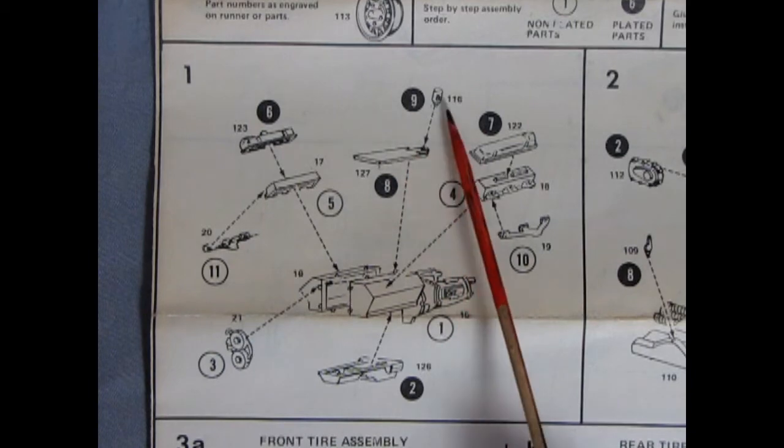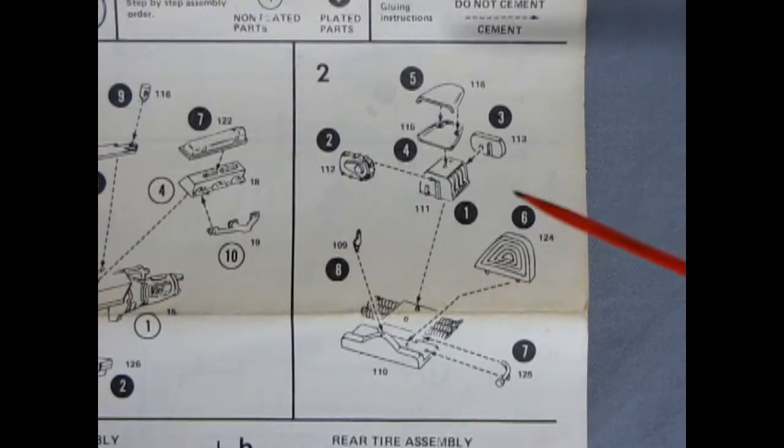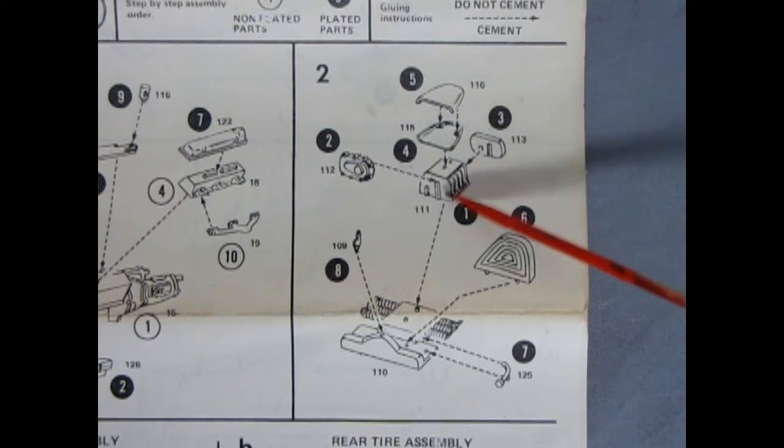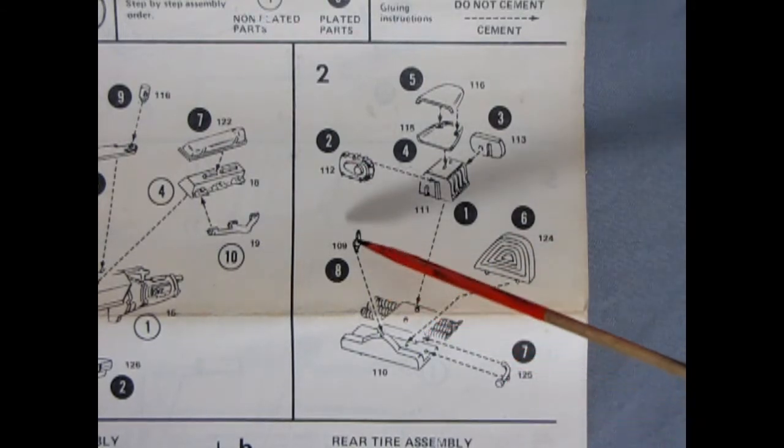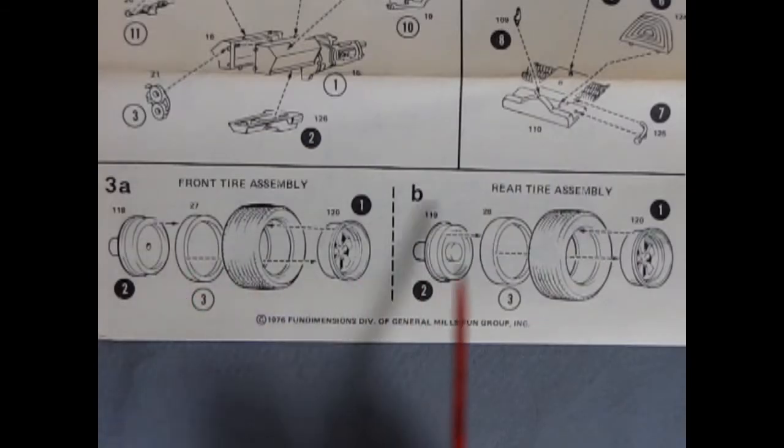Next up we have our one, two, three, four, five piece blower - actually a six piece because there's a cover in the front - and then this really wicked looking intake manifold that also has these little tubes and things up along the sides. Panel 3A and B show the front and rear tire assembly.